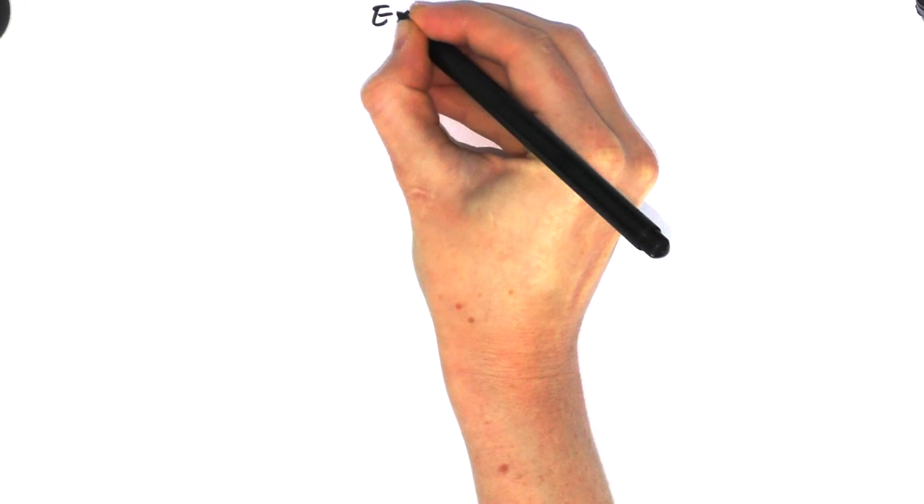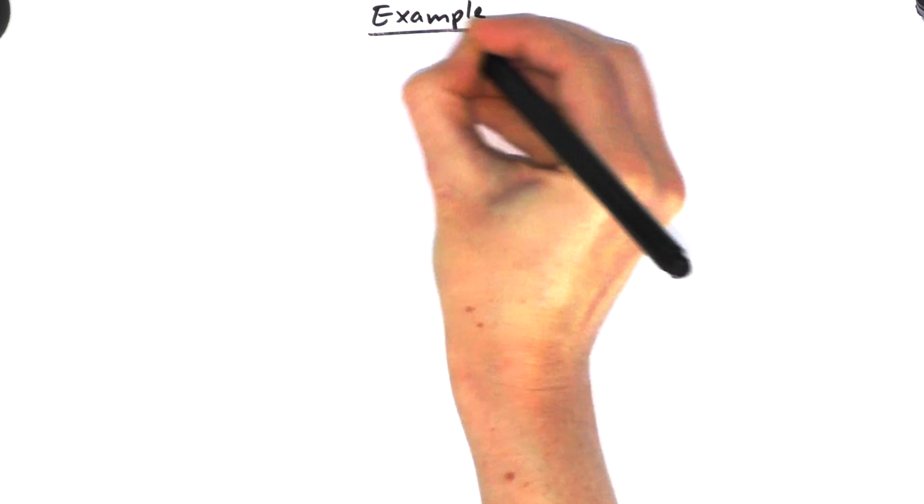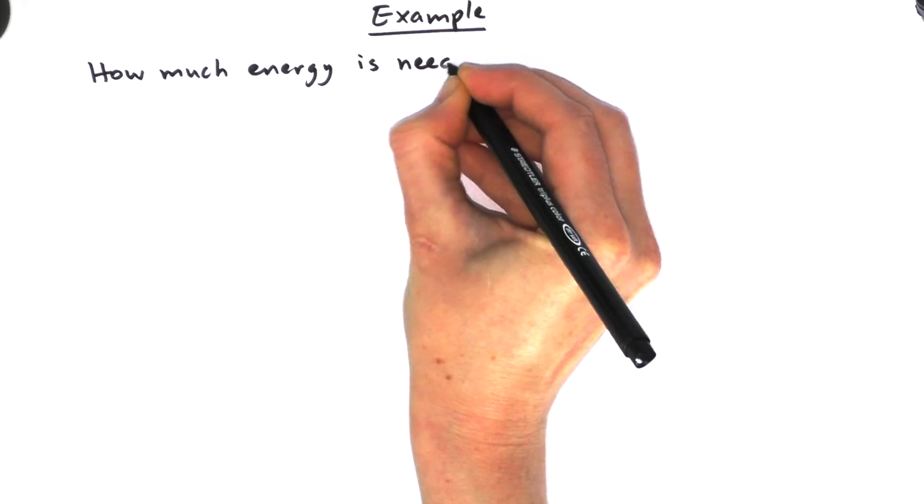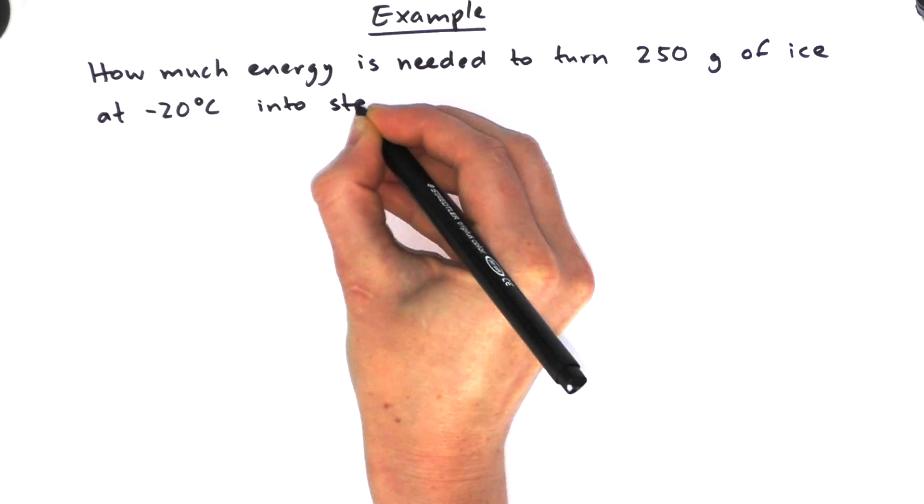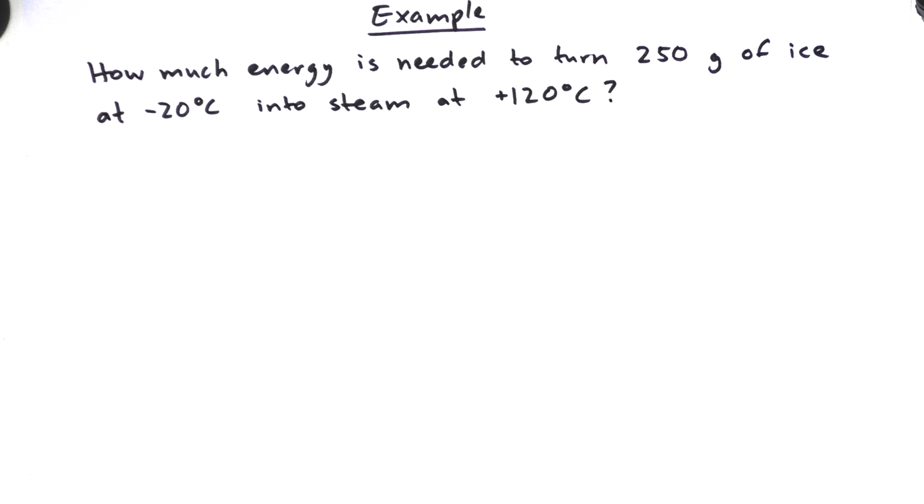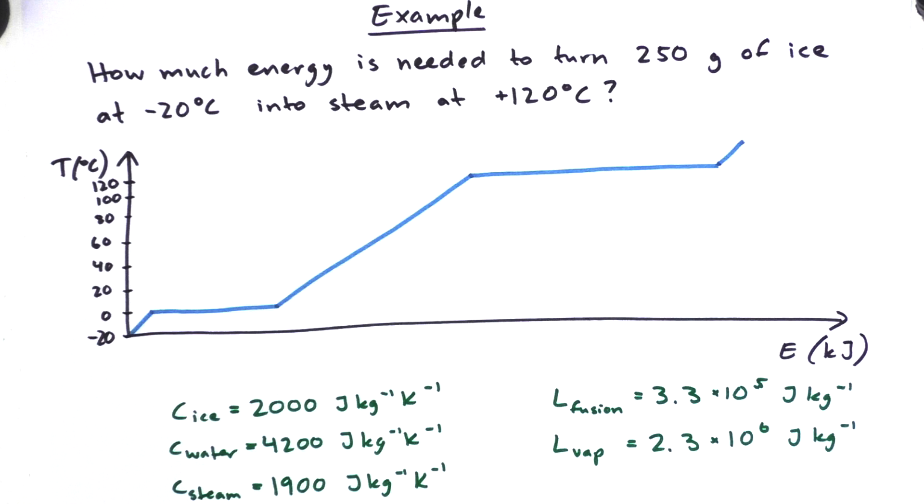And let's do an example of this. It's a bit of a marathon example, so just bear with me. So the question is, how much energy is needed to turn 250 grams of ice at negative 20 degrees Celsius into steam at positive 120 degrees Celsius? So that's a good question, isn't it? How are we going to solve it? Should we draw the phase change graph perhaps? That might be a good way to structure things because we're going to have a lot of things happening here. So could we have some axes please? Oh yeah, that looks good, but you forgot to label the axes. Thank you. And I think we're going to need a bit of data. Thank you very much.